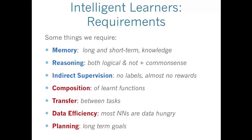First I just have this slide: we want to make an intelligent learner — what are the requirements for that? Here I've written down some: we'd like to have this learner to have a memory, to do reasoning, to work from relatively indirect supervision, and also to sort of learn the composition of functions, to be able to learn task transfer, to be data efficient, because a lot of our models are actually quite data hungry, and to do things like planning. There are lots of other things you could add to this list as well.